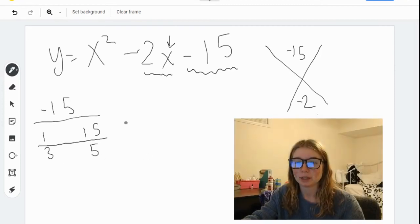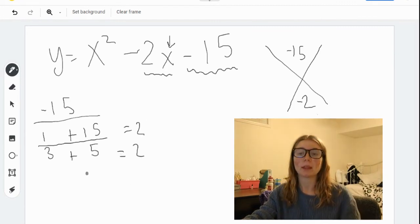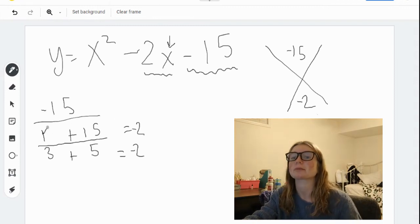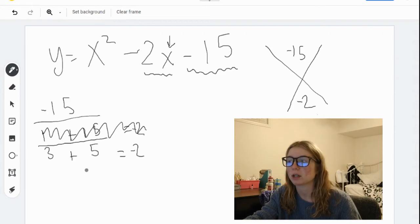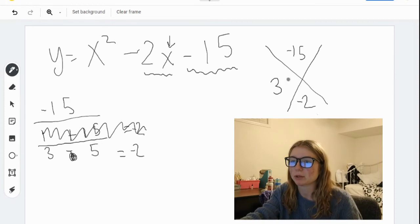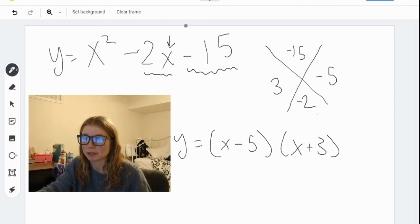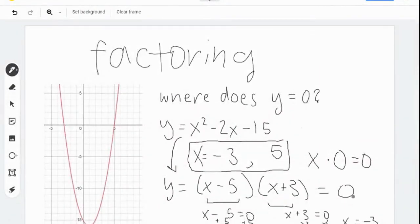So looking at these factors, we need to figure out which one adds to negative 2 with a negative number in one of them. The first set doesn't work. But if we look at the second set of factors, 3 minus 5 equals negative 2. So we can say 3 and negative 5 are our factors. When we go back to our equation, we can say that it's x minus 5 times x plus 3.